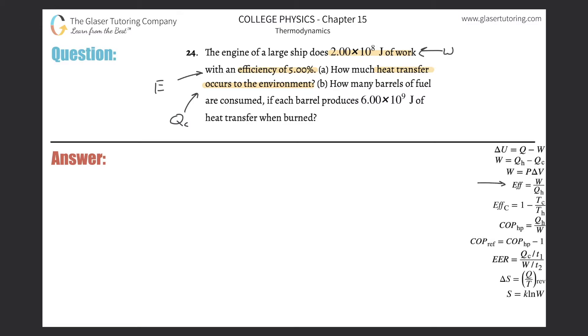I know that efficiency and work are related via this formula on the right. The efficiency of an engine equals work output divided by the heat of the hot reservoir Q_h, which is just the amount of heat put into the engine.